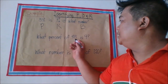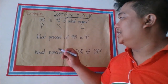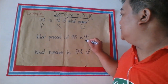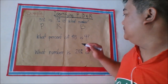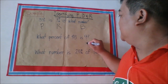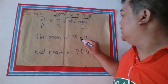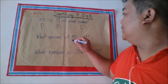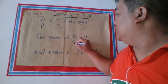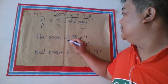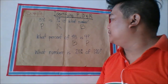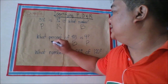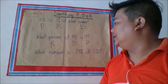Next example: What percent of 45 is 9? Here, 9 is the percentage because it is followed by the word 'is.' 45 is the base because it is followed by the word 'of.' And 'what percent' is the rate.